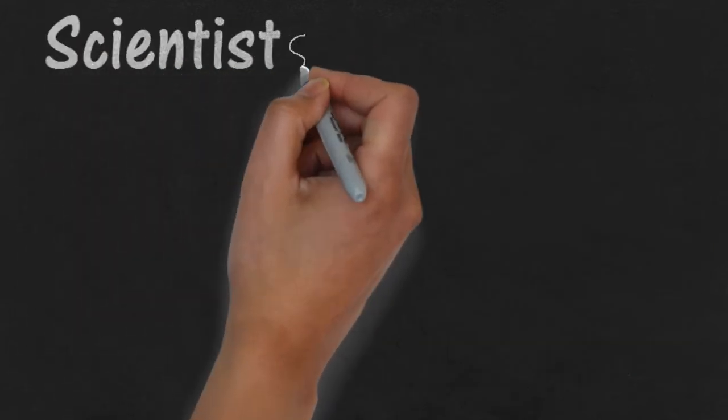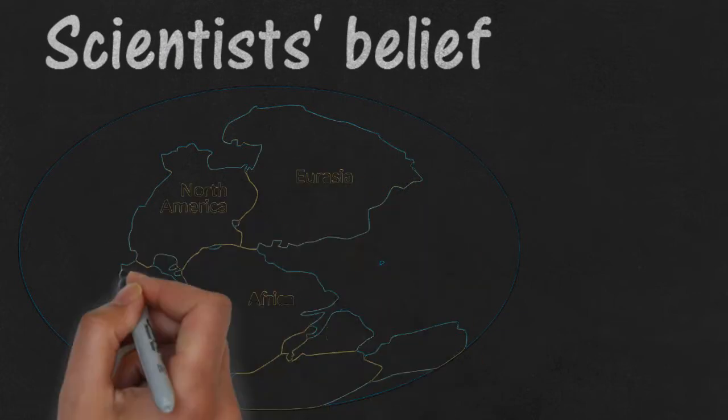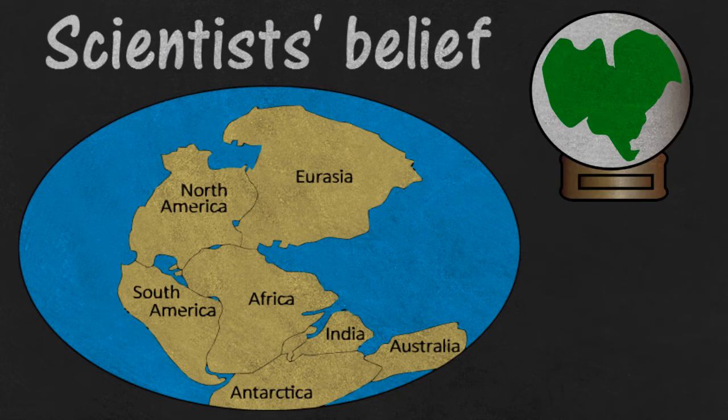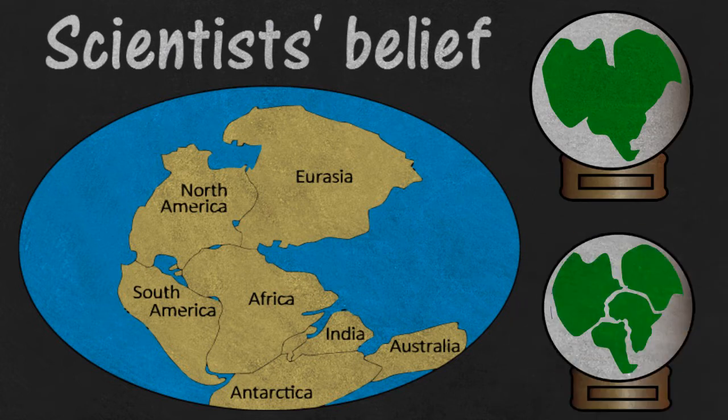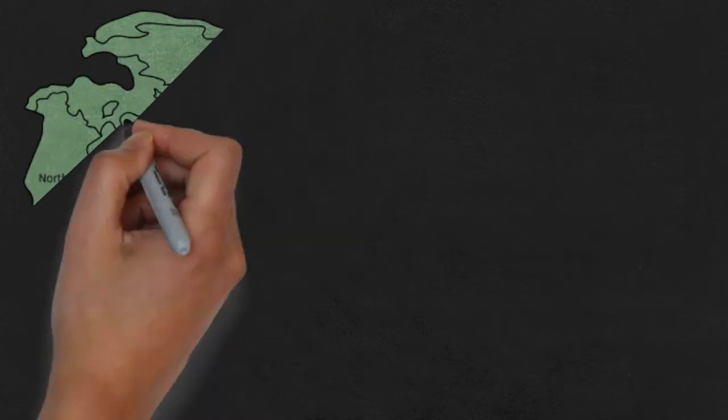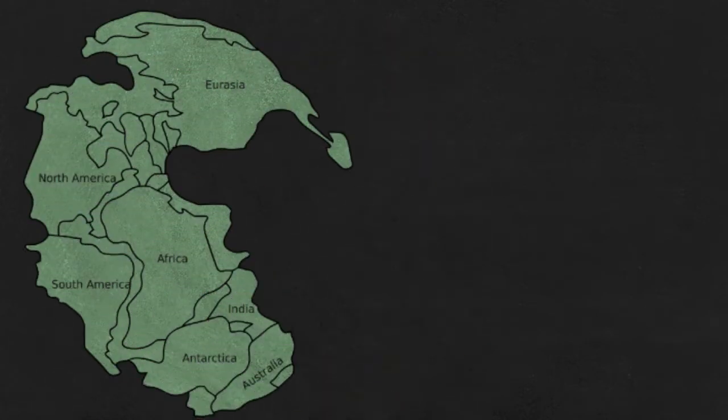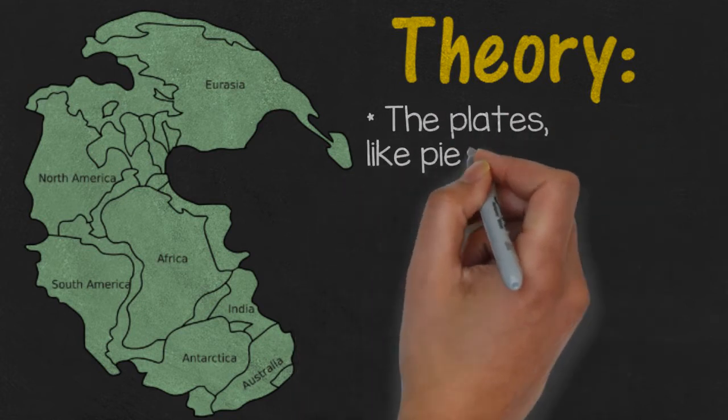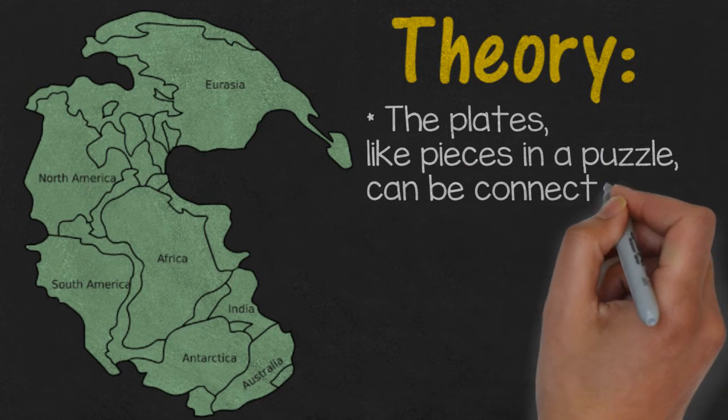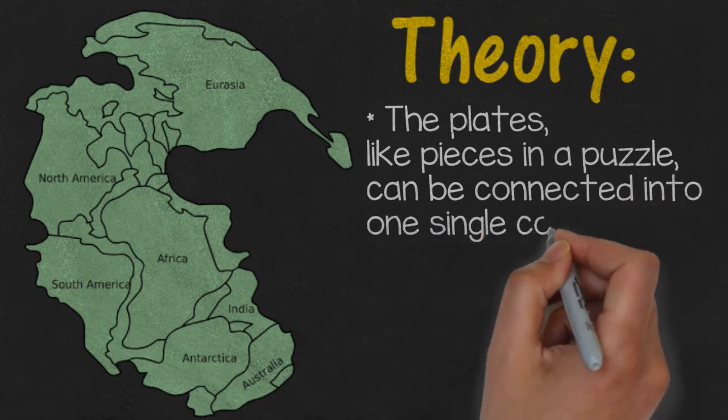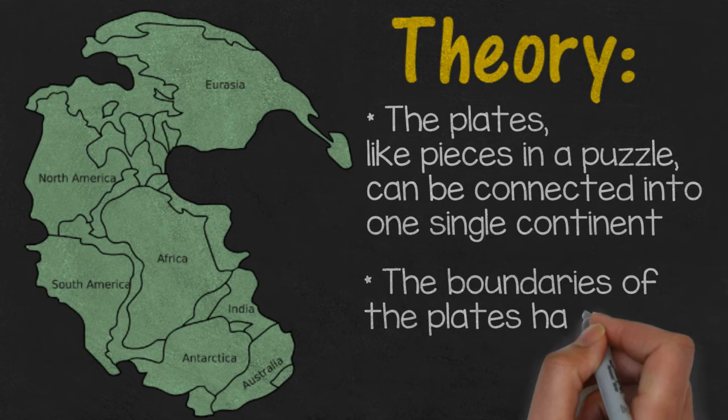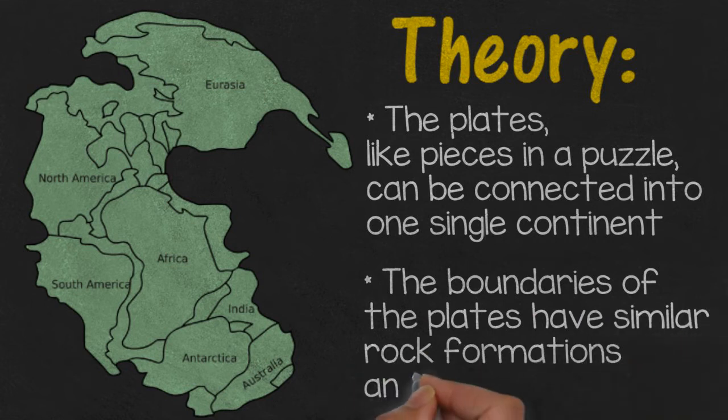Scientists believe, and for good reasons, that at one time all the plates were connected into one large land mass and that plate tectonics is the reason they broke up into the plates that we know today. And here's how they came up with this theory. One, the plates like pieces in a puzzle can be connected into one single continent. And if you ever noticed how Africa and South America just seem to fit, you can see how they came up with this idea. And two, the boundaries of the plates have similar rock formations and fossil findings.